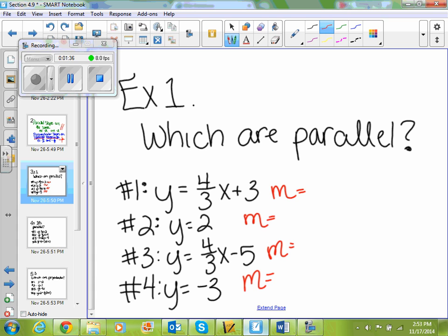Alright, so on y equals four thirds x plus three, what's our slope? Four over three. Four over three. So that's going to be our slope for our first line. So if it weren't perpendicular yet, we're looking for parallels. We're looking for the same this time. What's our slope on number two? Zero. Zero. Nothing. And there's no extra slope of zero. So that's five over three, and then zero.